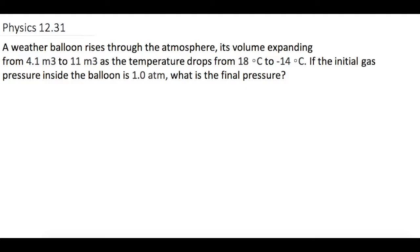So they tell us V_i equals 4.1 meters cubed, V_final equals 11 meters cubed. Initial temperature drops from 18 degrees Celsius to final temperature of negative 14 degrees Celsius. If we add 273 to both, 18 gives us 291 Kelvin, and the final temperature, negative 14, gives us 259 Kelvin.